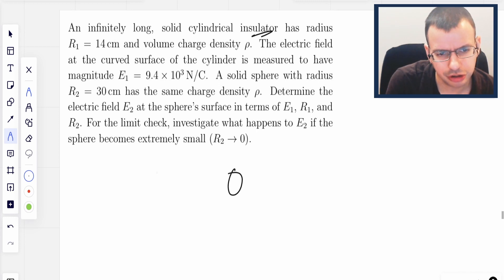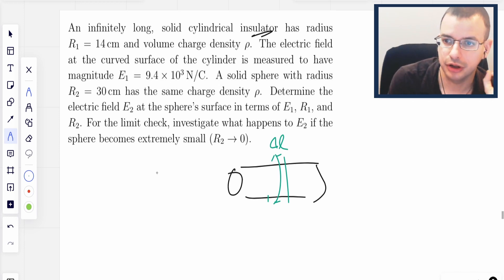First thing we're going to do is draw a picture of our cylinder, and I'm going to look at a small delta L. The formula for the electric field due to a line of charge is 2K lambda over Z.